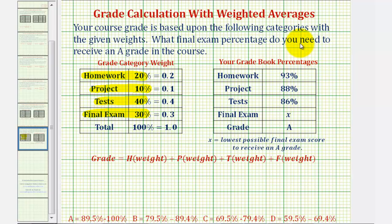What final exam percentage do you need to receive an A grade in the course? So your homework average is 93%, which is worth 20% of the grade. Your project grade is 88%, worth 10% of your grade. Your test average is 86%, worth 40% of your grade.